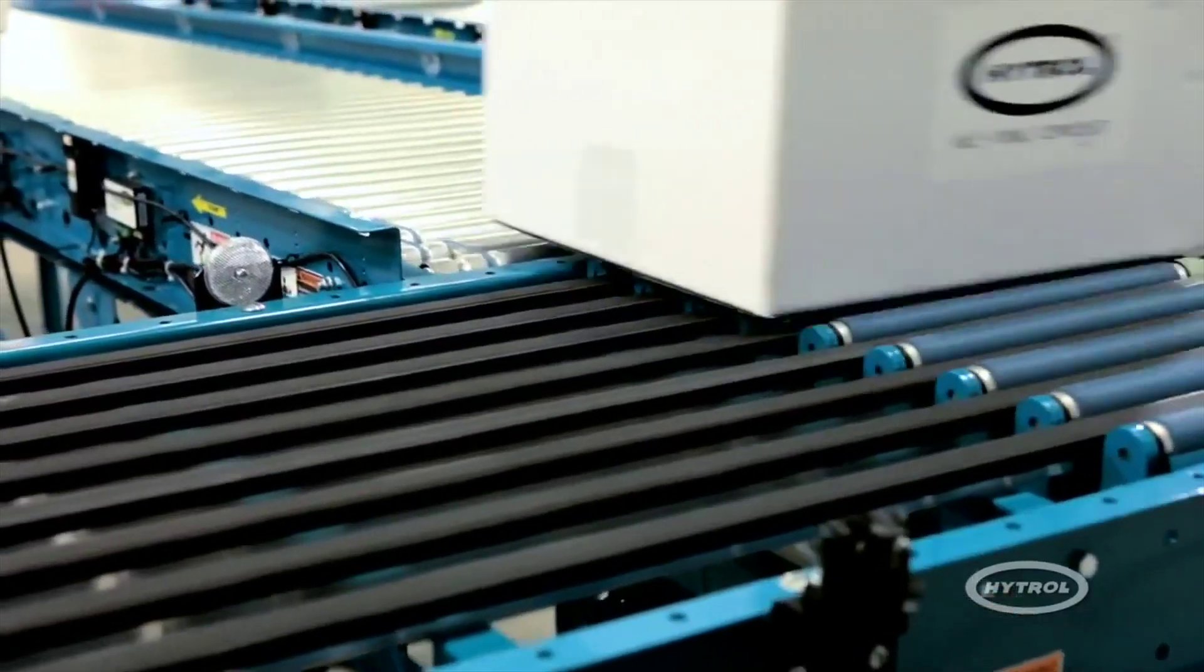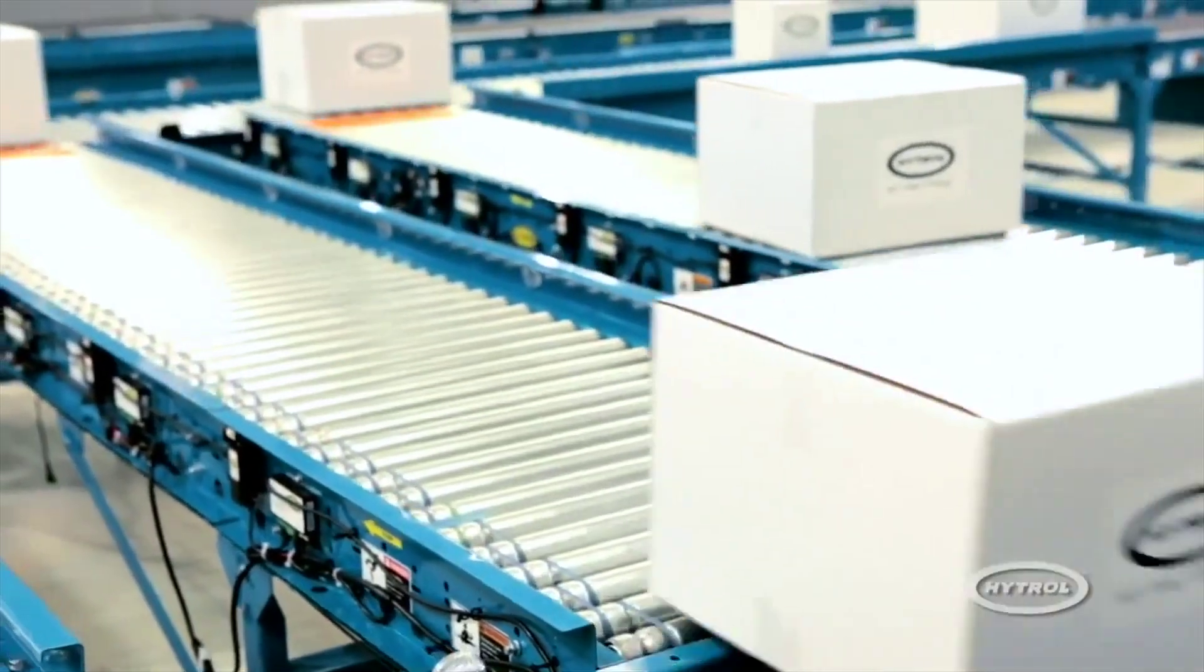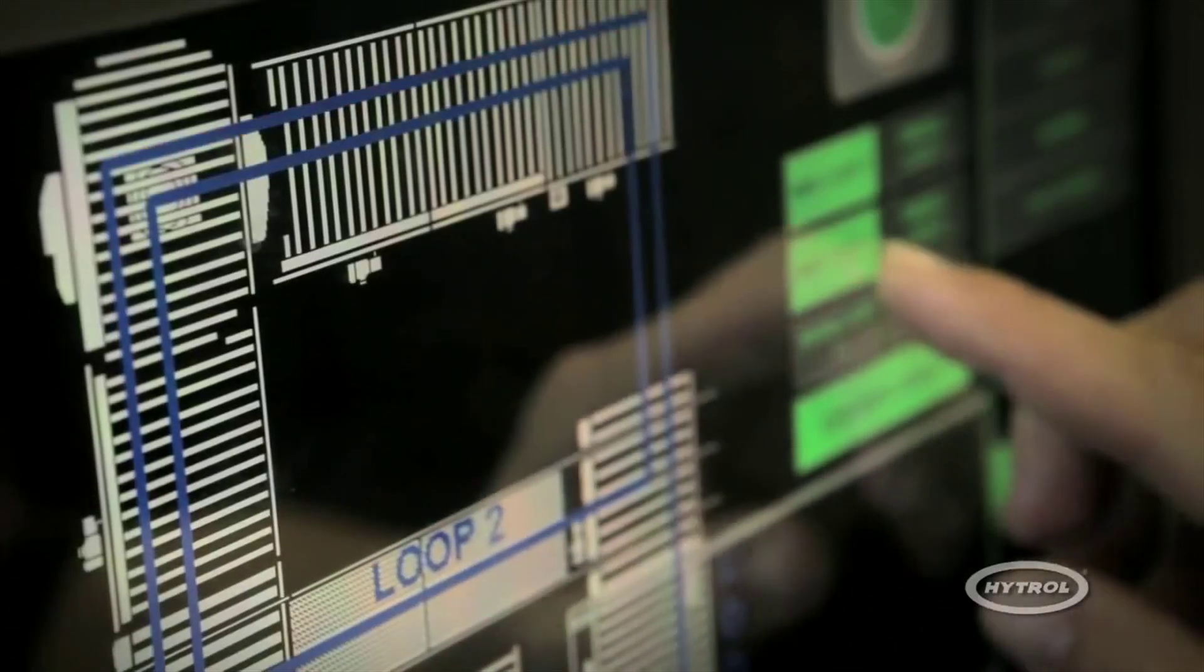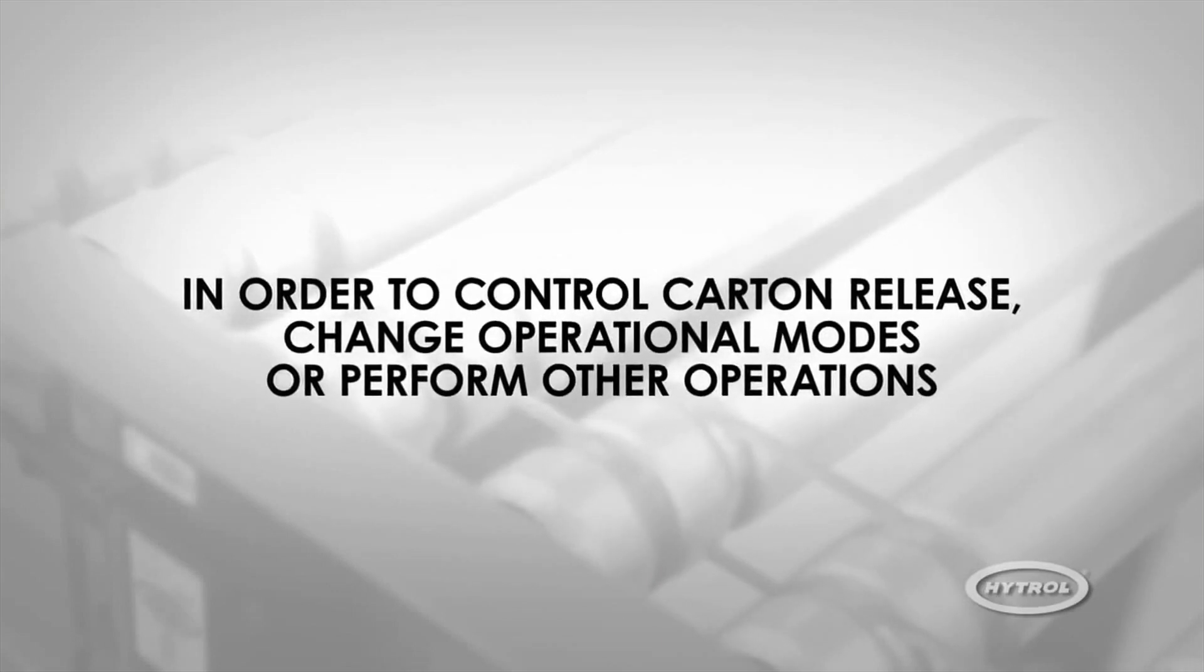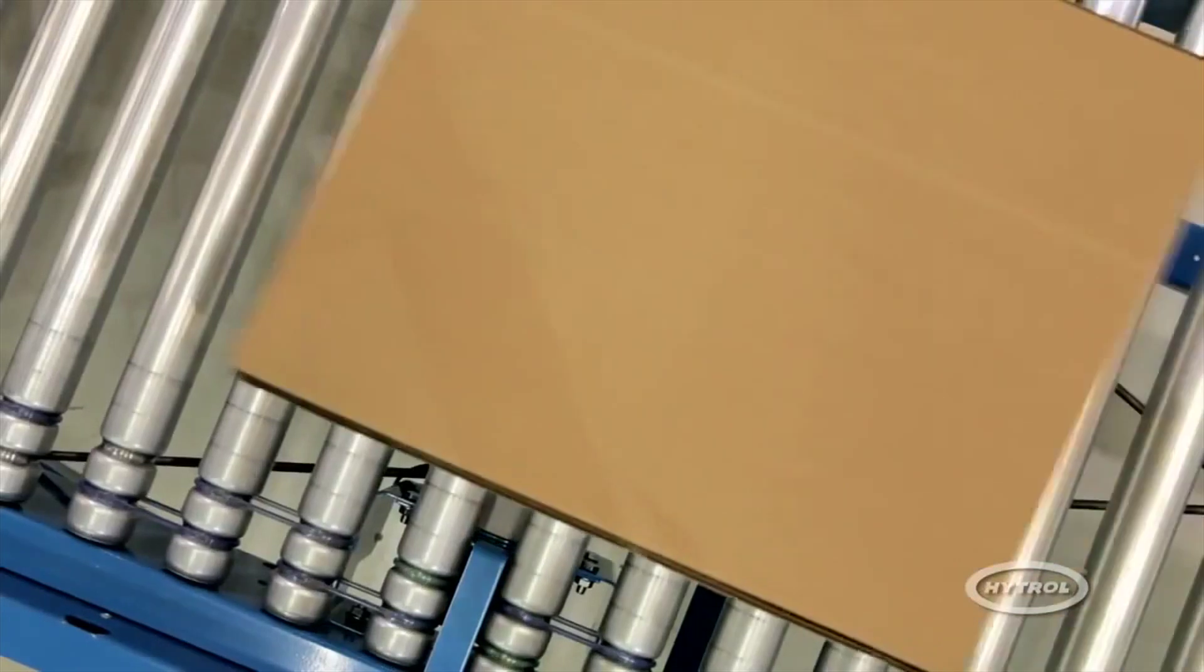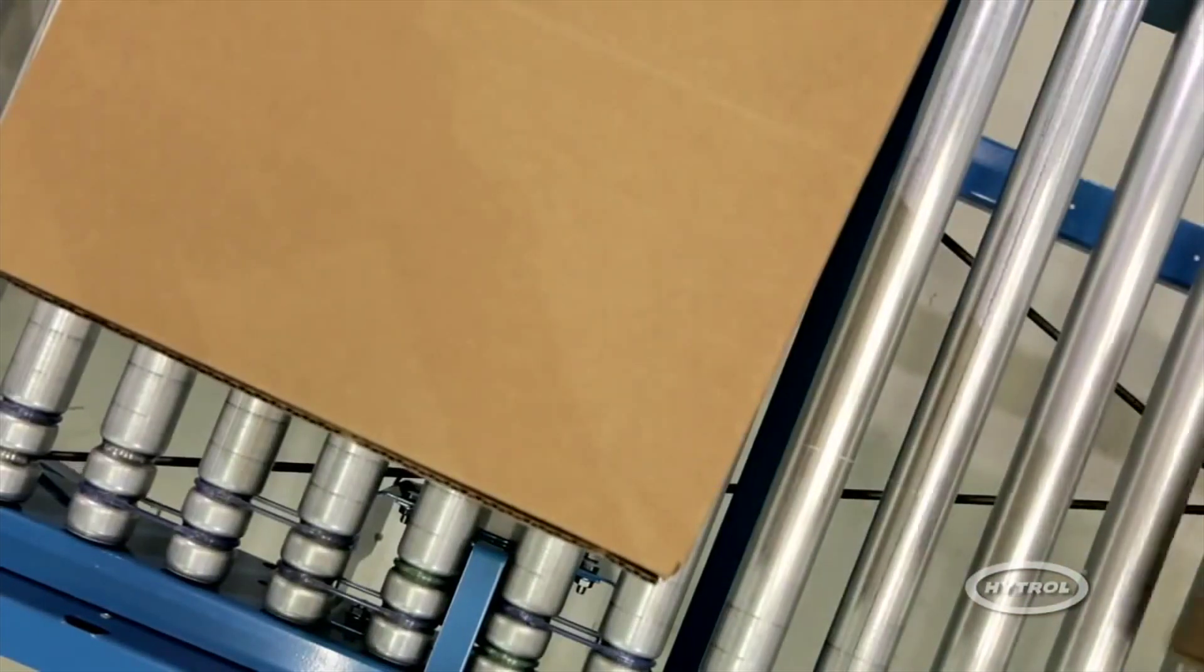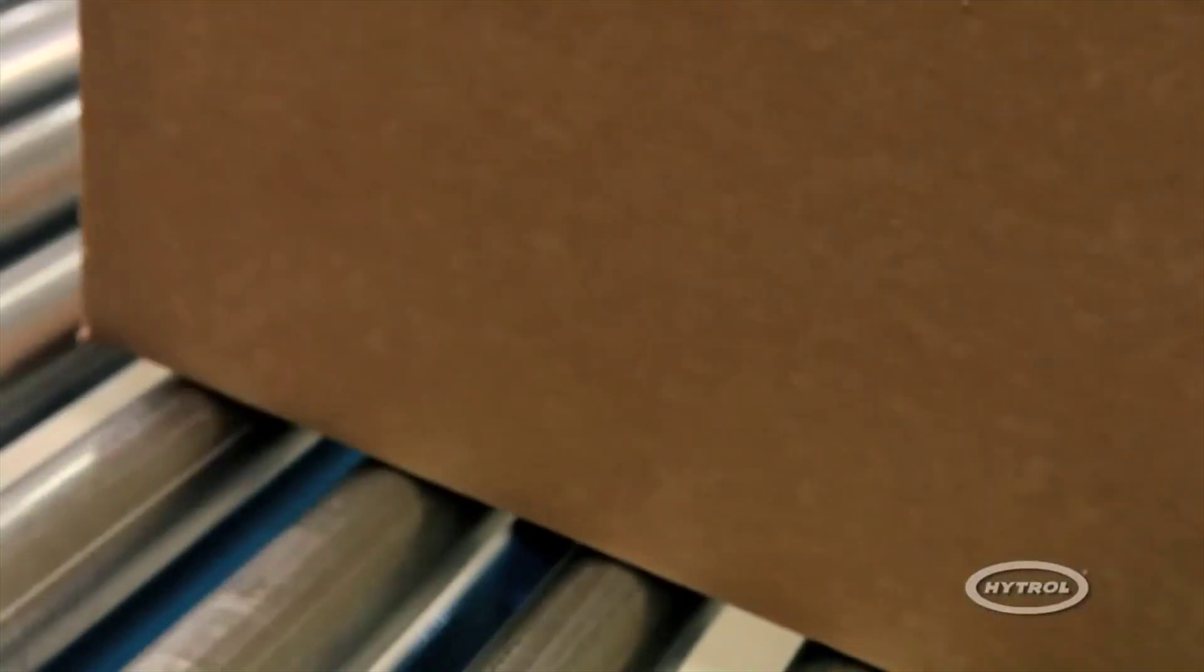Overall system functionality can be enhanced with how easily it interacts with other control devices and equipment. Inputs can be given to EasyLogic zone controllers in order to control carton release, change operational modes, or perform other operations. Additionally, the EasyLogic system provides various output signals indicating when a zone is full, when it has accumulated a carton, and other specific conditions.